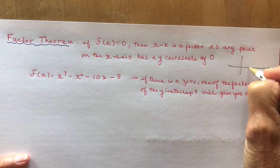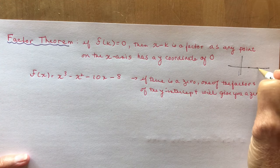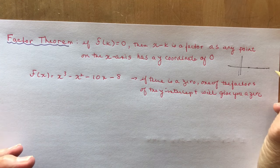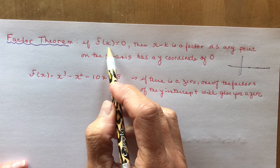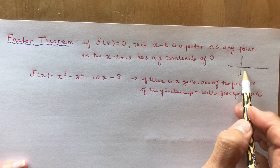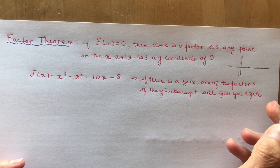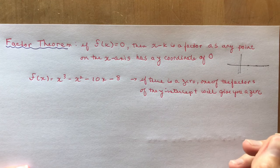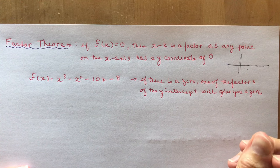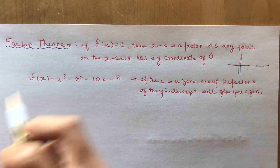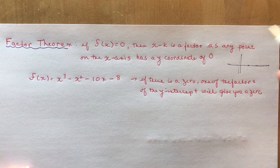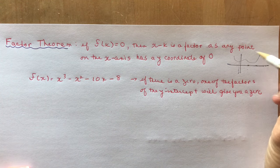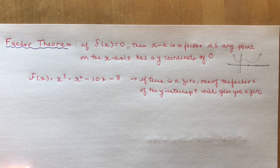If I'm on the x-axis, what are the coordinates of these points? 1, 0; 2, 0; 3, 0 — they all have a y-coordinate of 0. So if f(k) equals 0, in other words if I plug in some value for x and I get a height of 0, then I'm on the x-axis. Now you have to remember that you might not get any factors at all if it's not a cubic function, and some aren't even factorable. If you had a quartic function sitting up here, you're not going to get any zeros.